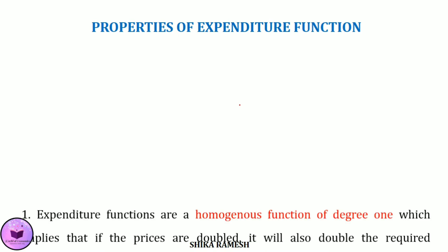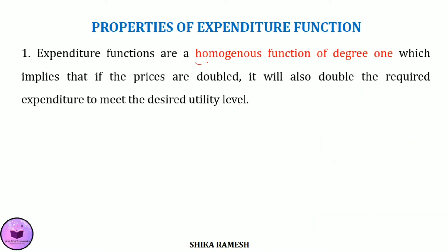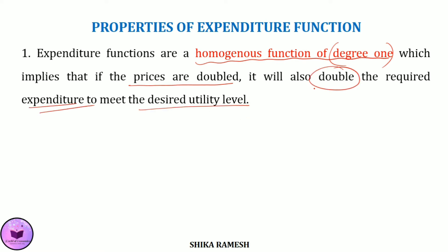The first property is that expenditure functions are a homogeneous function of degree 1 in prices. Homogeneity of degree 1 means that if all prices are scaled proportionally, the minimum expenditure required to meet the desired level of utility scales by the same proportion.